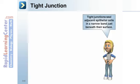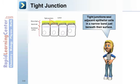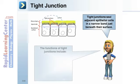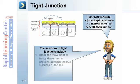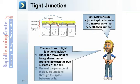Tight junctions seal adjacent epithelial cells in a narrow band just beneath their surface. The functions of tight junctions include: blocking the movement of integral membrane proteins between the two surfaces of the cell, and preventing the passage of molecules and ions through the spaces between the cells.